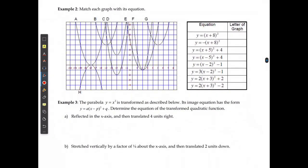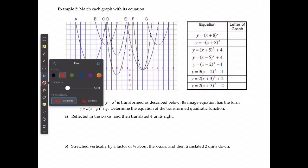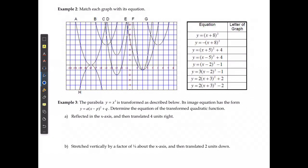Alright, if we are matching a graph with its equation, I can look at my a value, my p value, and my q value to solve how this is going to look. The p and q are great indicators because they are going to be what my vertex is. In the first case, if I have y equals x plus 8 squared, I got an a value of 1, a p value of negative 8 because it's opposite, and a q value of 0.